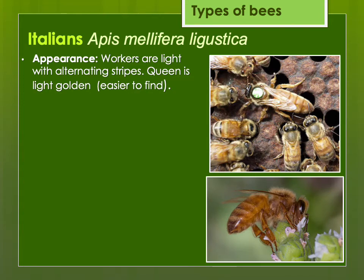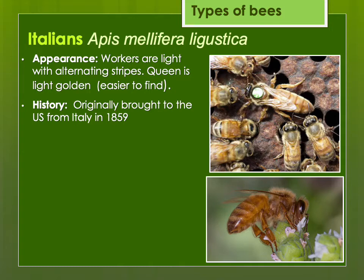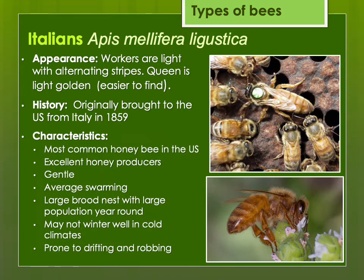The Italians are a very popular bee. They're light in color and the queen is light golden, so she's much easier to find than darker bees. They were originally brought to the U.S. from Italy in the mid-1800s — before that we only had the German black bee. They're the most common honeybee strain in the U.S., excellent honey producers, tend to be gentle, and don't tend to swarm more than other types. They do produce a large brood nest with a large population year-round. They evolved from the Mediterranean where winters weren't cold, so they may or may not do as well wintering in cold climates, although strains that were northern-bred and selected for winter ability can winter well. On the negative side, they tend to rob other bees more and may not be as well-oriented to their hive location, so they may drift.